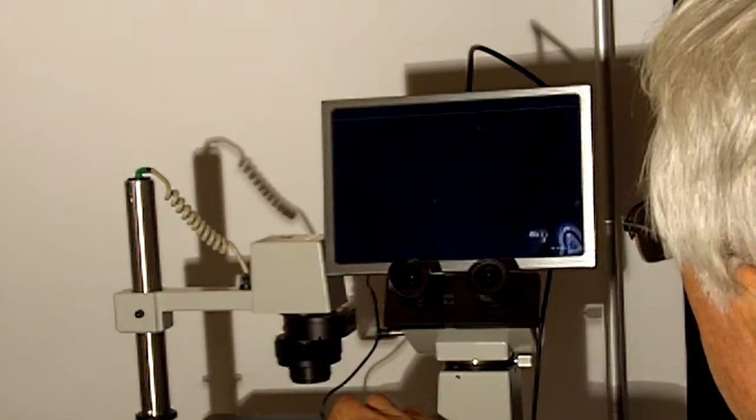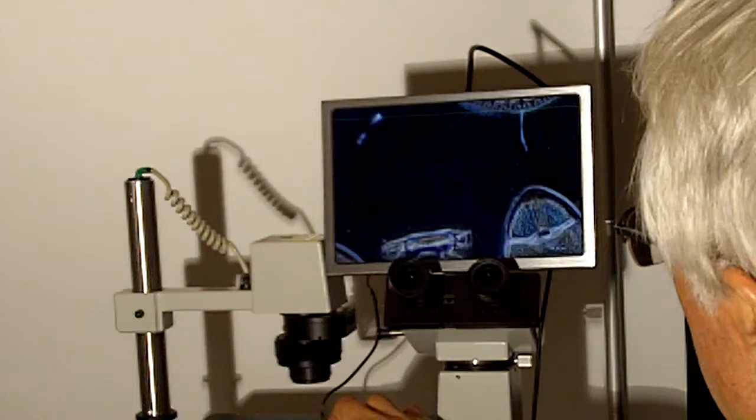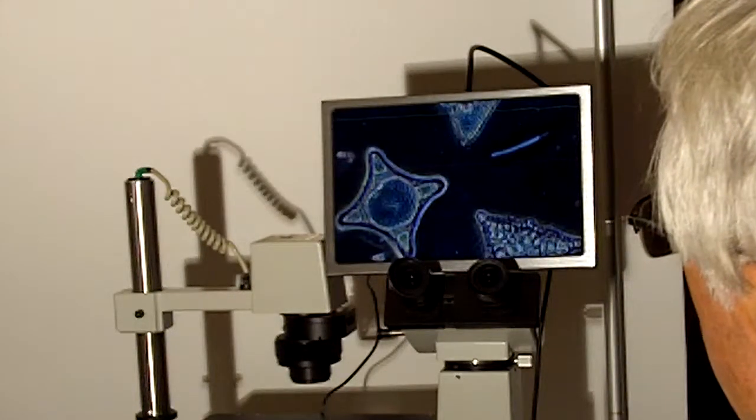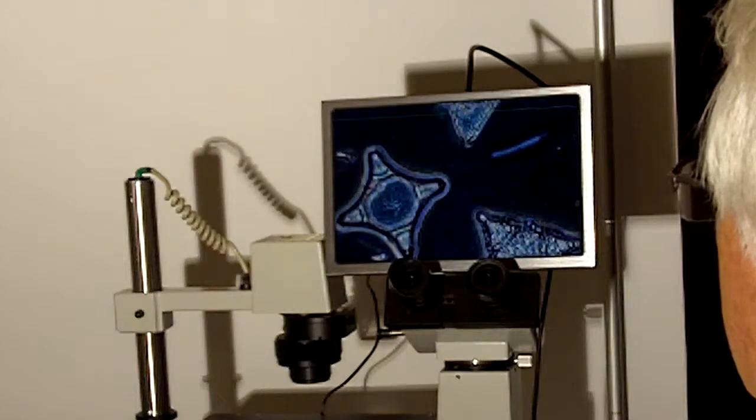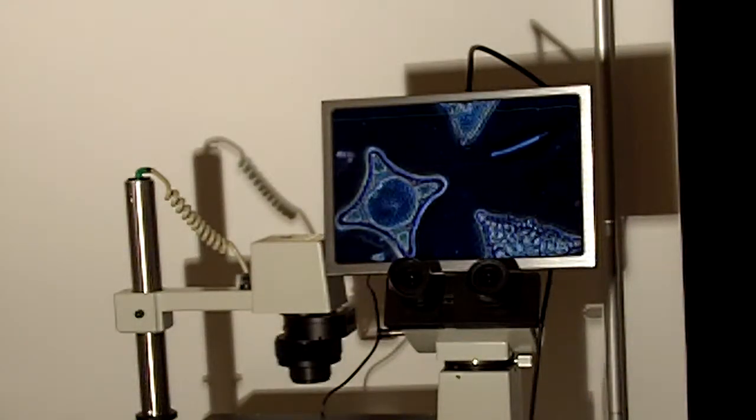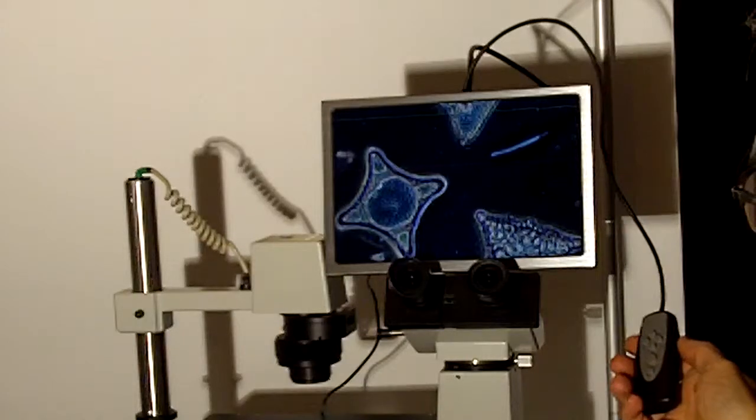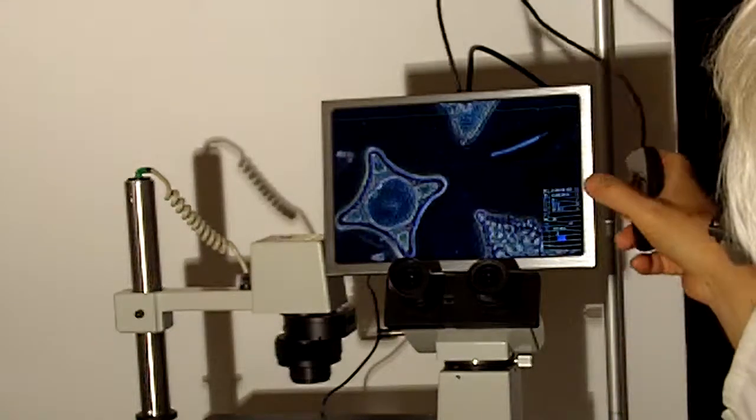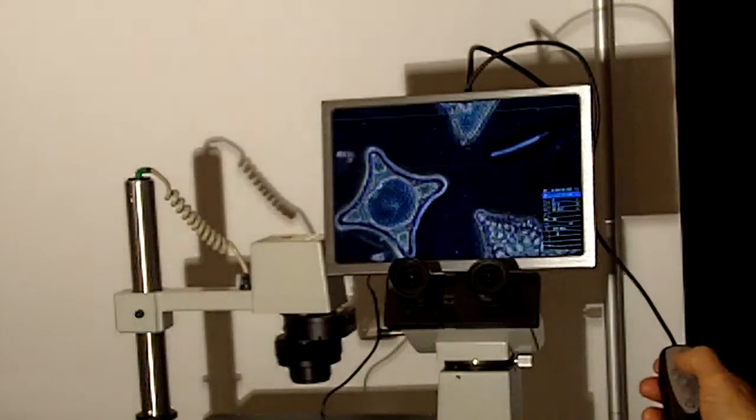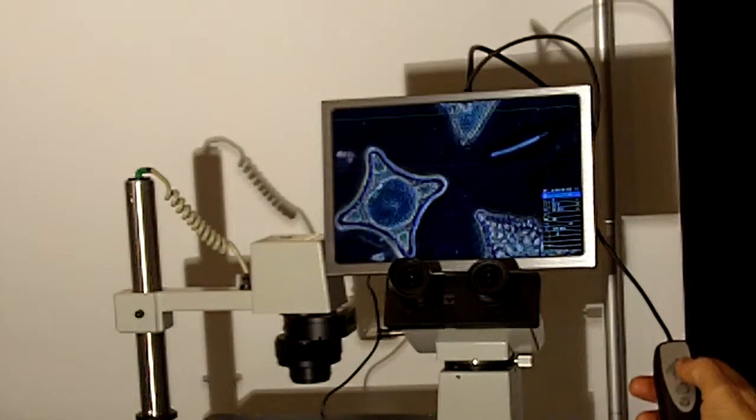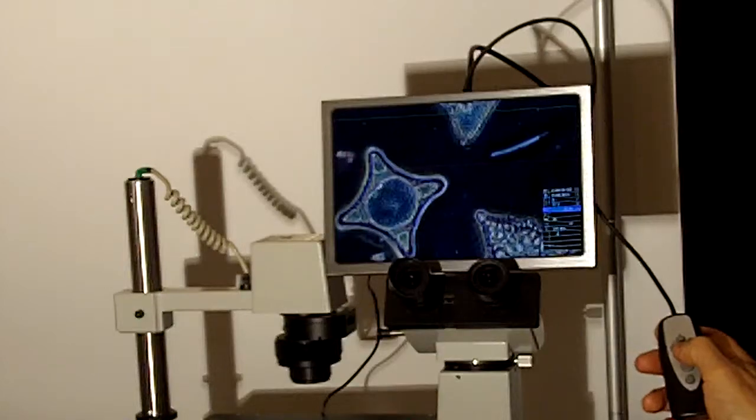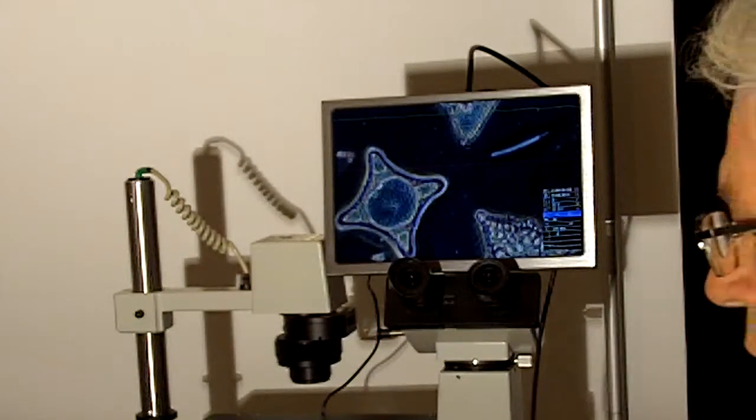This is running at 60 frames per second, which is really nice because there's no herky-jerky image delay. This is a 40x objective, though we could also dial in lower power objectives. With the remote control, we can bring in the menu screen, which displays in the lower right-hand corner, and adjust the usual camera characteristics such as contrast, brightness, red, green, and blue.